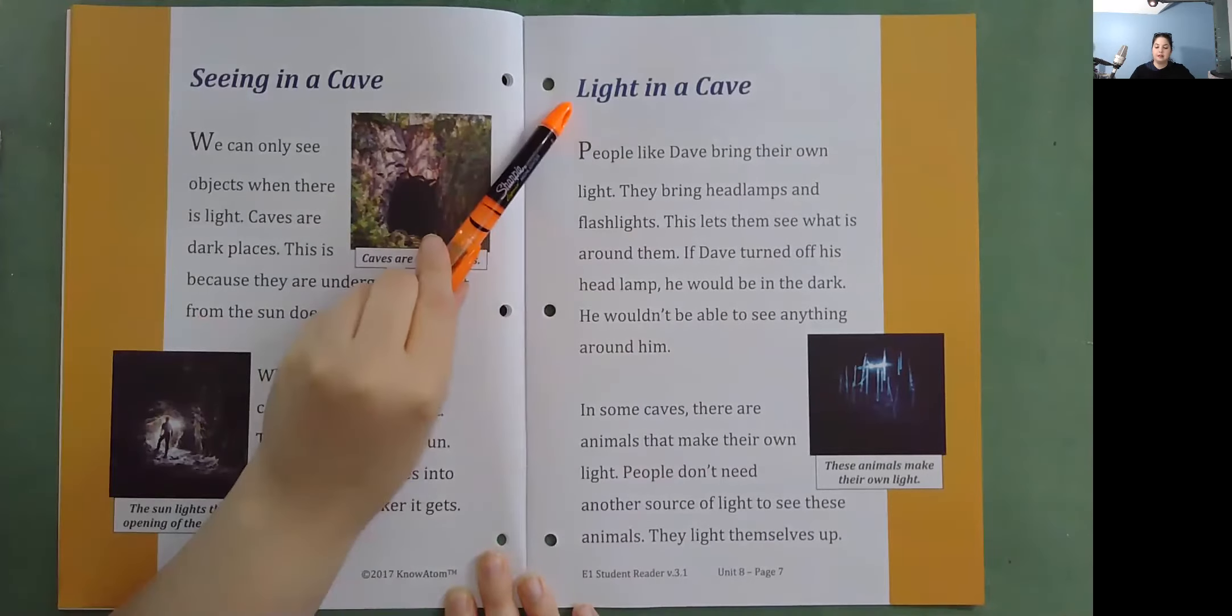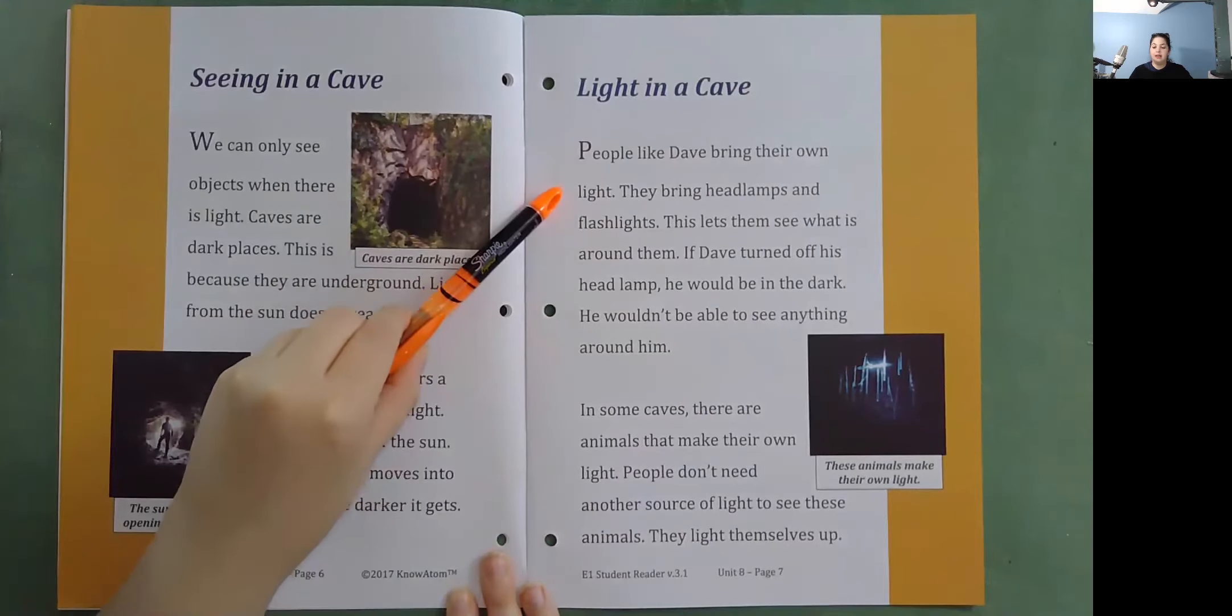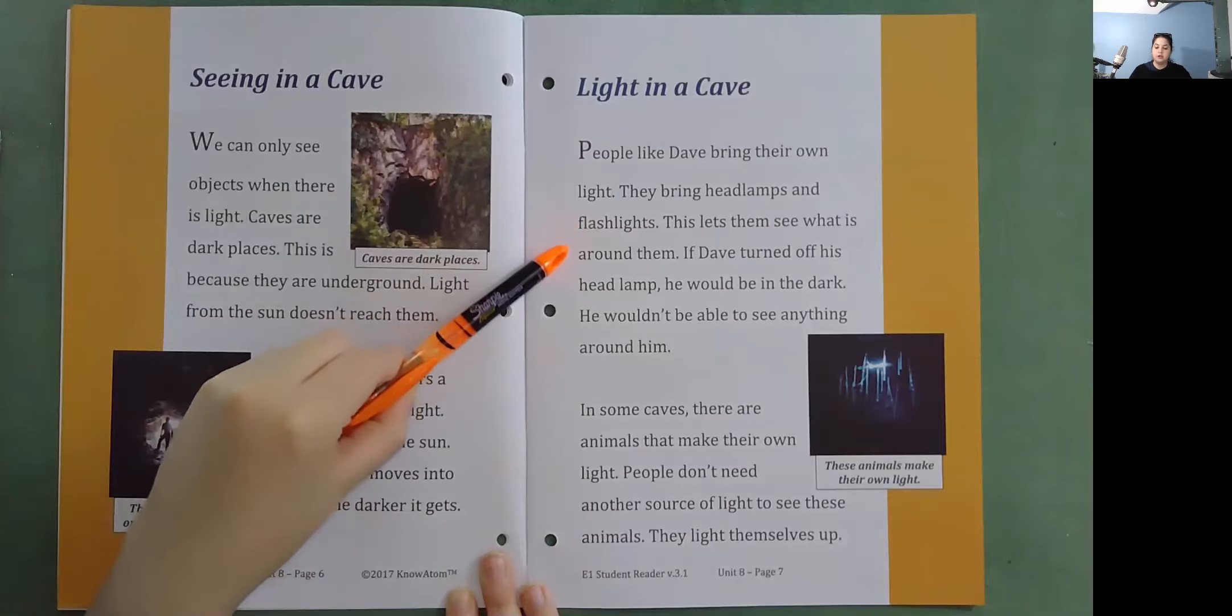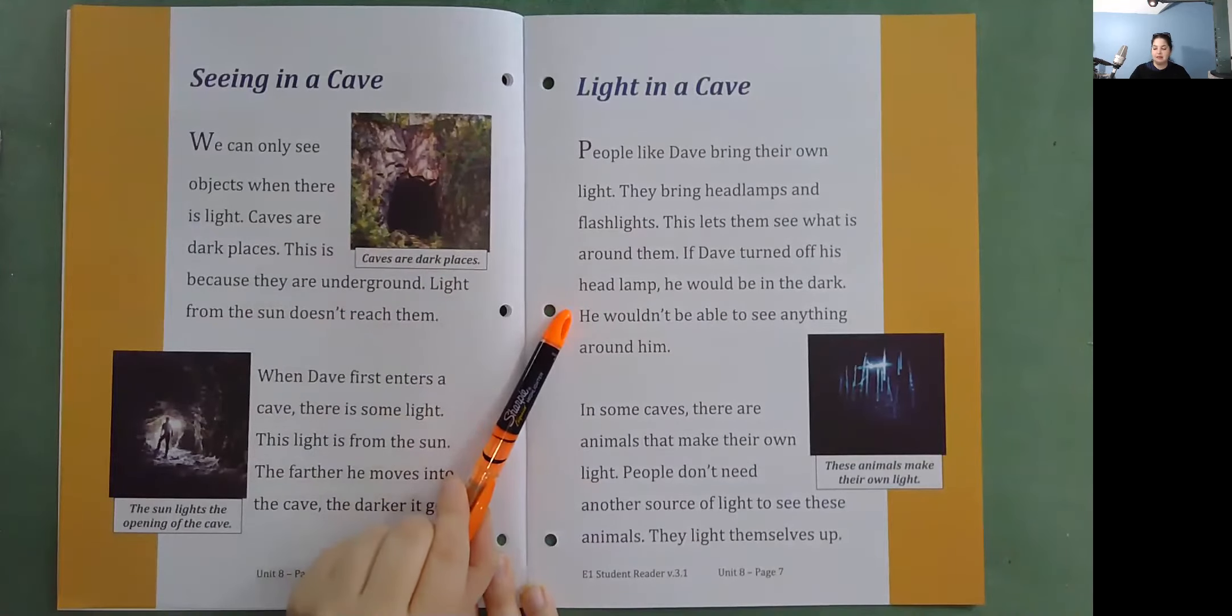Light in a cave. People like Dave bring their own light. They bring headlamps and flashlights. This lets them see what is around them. If Dave turned off his headlamp, he would be in the dark. He wouldn't be able to see anything around him.